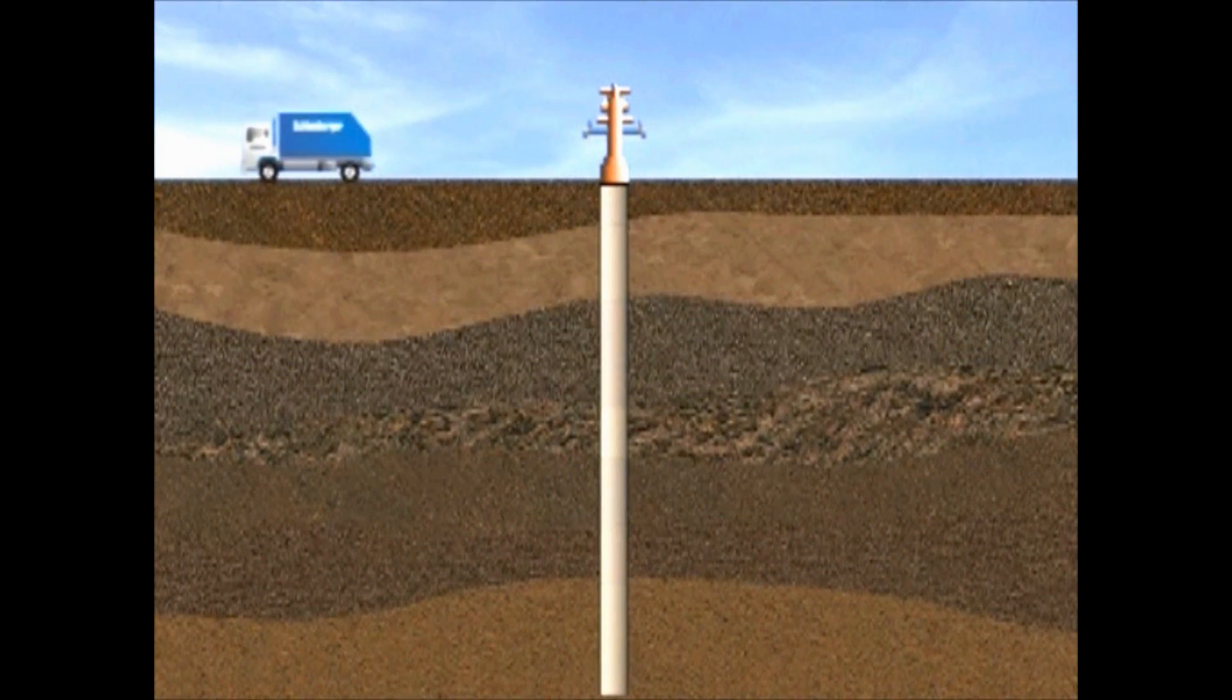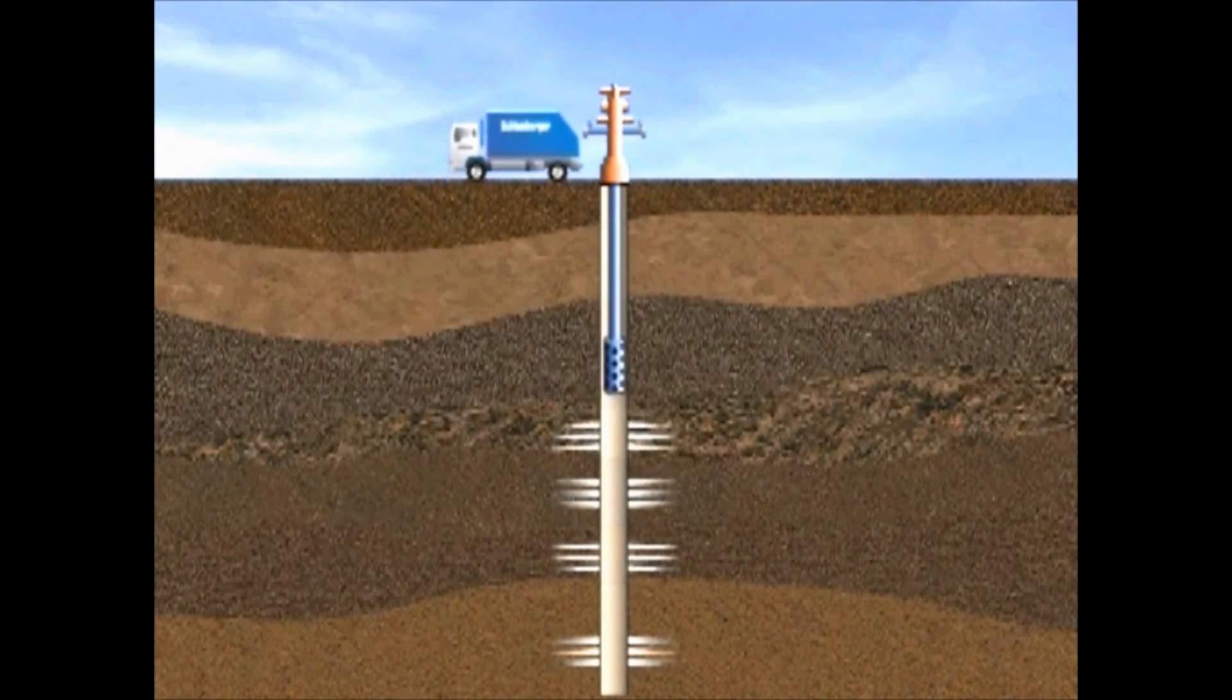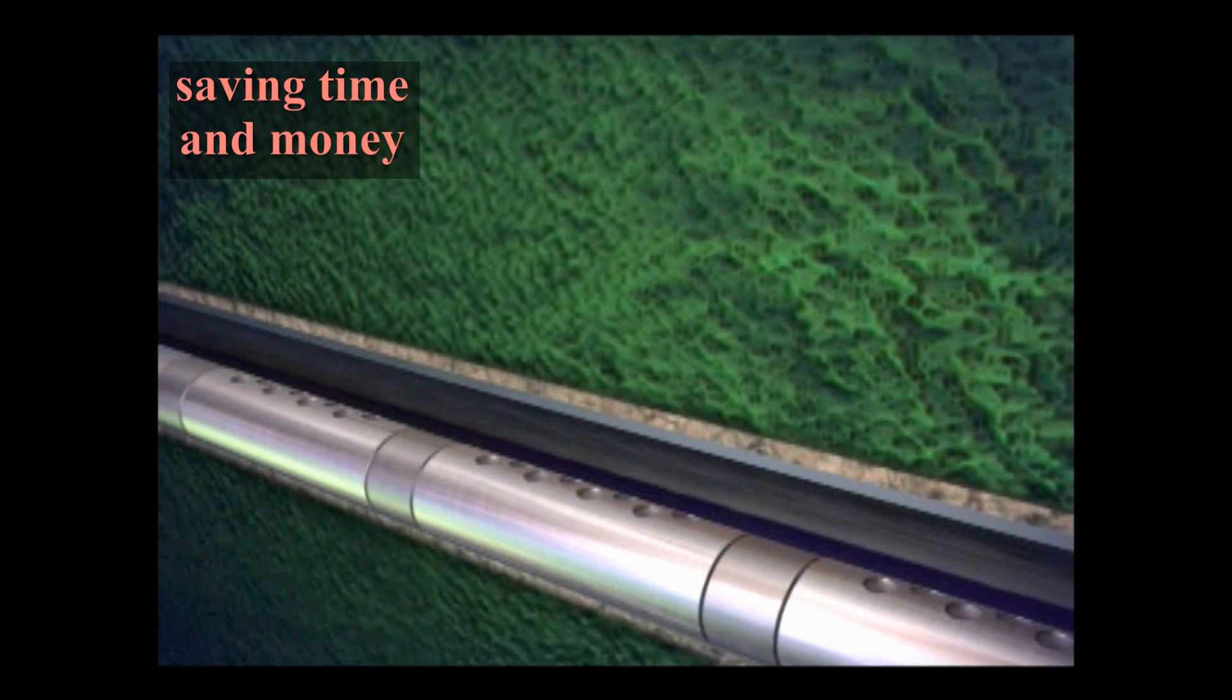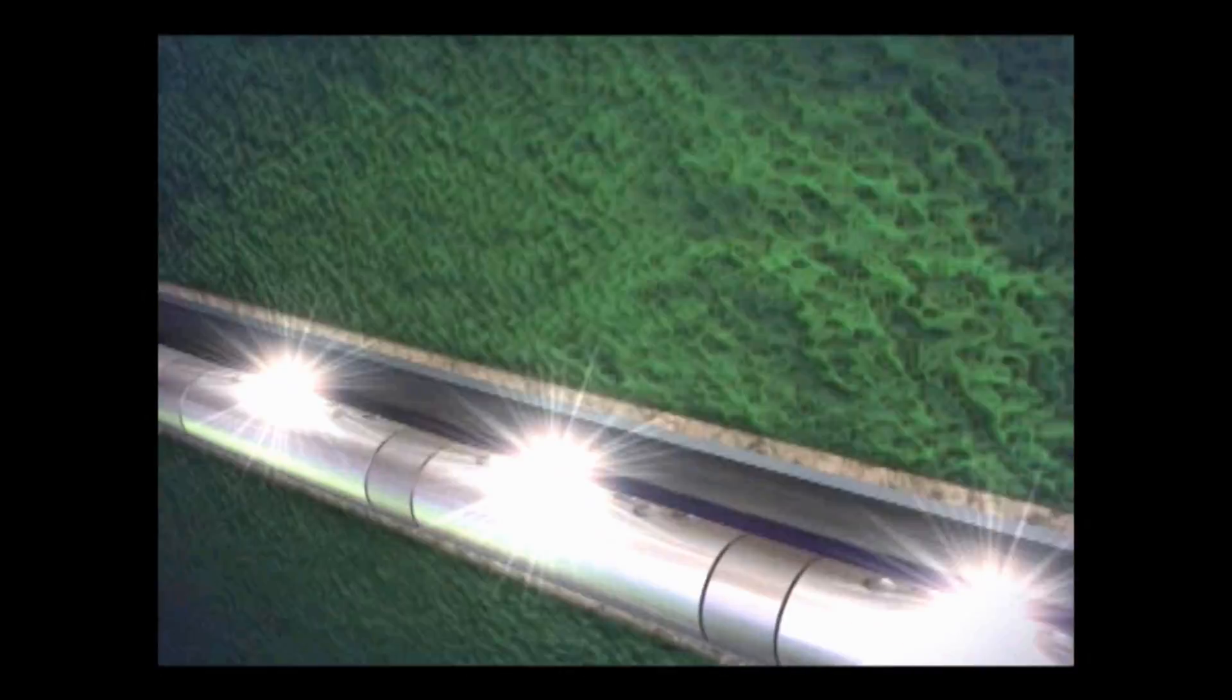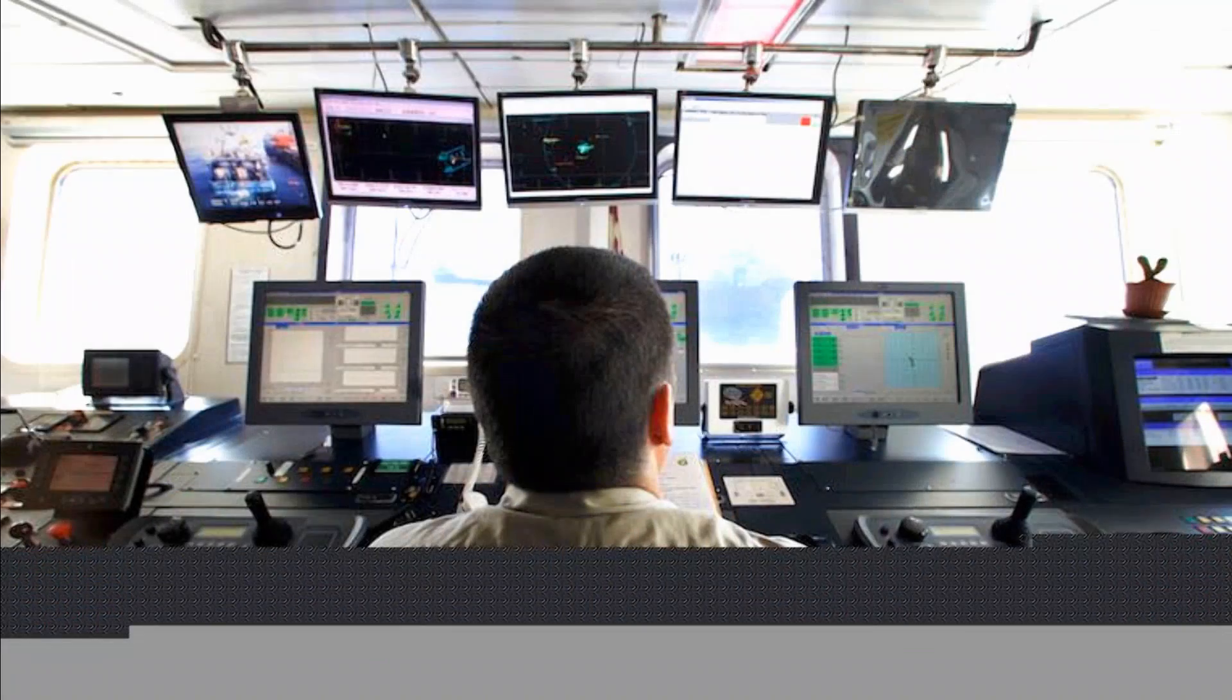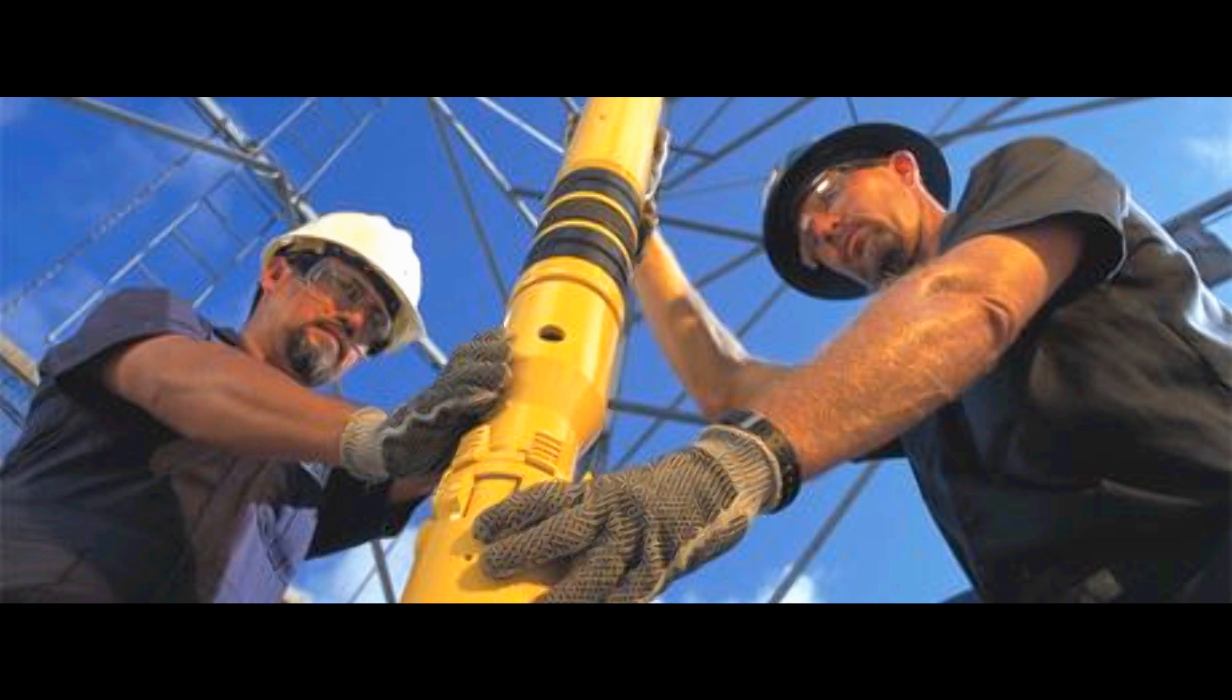In addition, once the zone has been perforated in under-balanced conditions, it can then be immediately placed on production. Not only saving time and money, through tubing perforating can also greatly reduce any formation damage that might be caused when the flow rates are stopped, known as killing a well, to run down whole equipment.